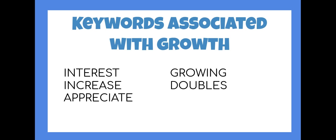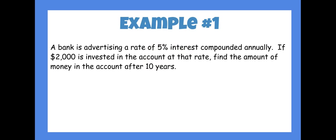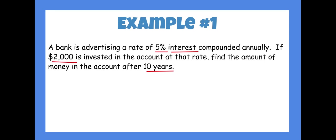Let's go to the first example. I'm going to guide you through it and then you're going to do some on your own. Pause the video and make sure you have all the notes down. Example one: A bank is advertising a rate of 5% interest compounded annually. If $2,000 is invested in the account at that rate, find the amount of money in the account after 10 years.